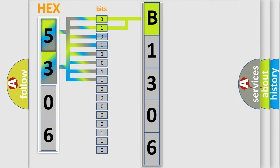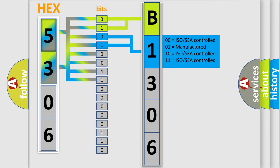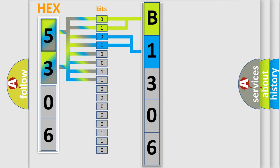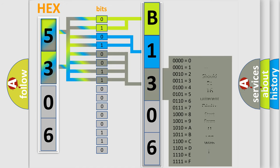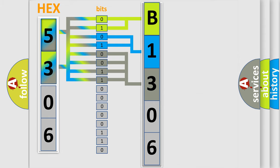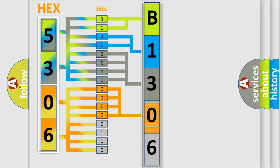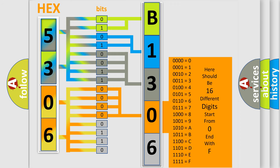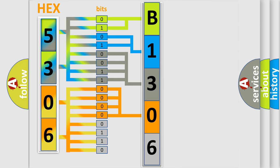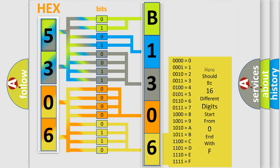The next two bits determine the second character. The last bits of the first byte define the third character of the code. The second byte is composed of a combination of eight bits. The first four bits determine the fourth character of the code, and the combination of the last four bits defines the fifth character. A single byte conceals 256 possible combinations.